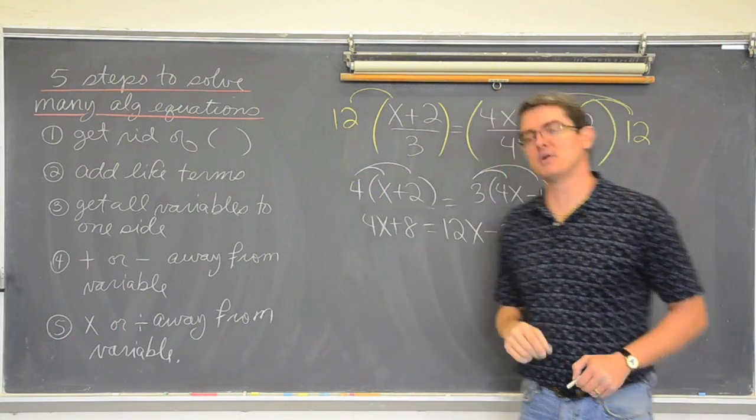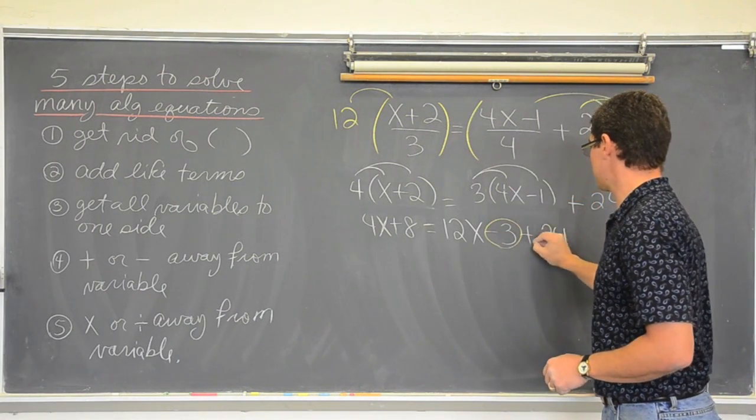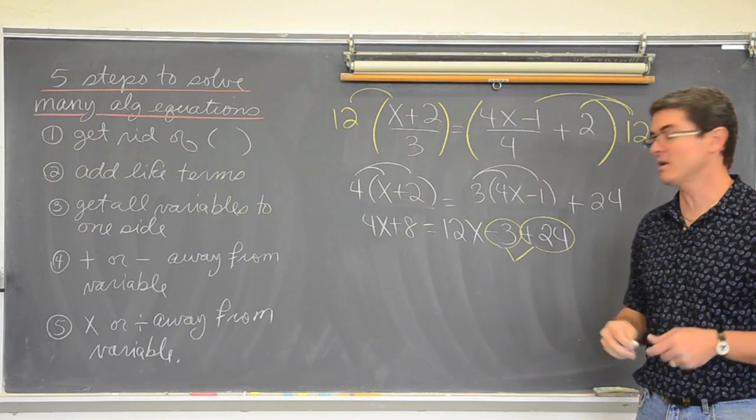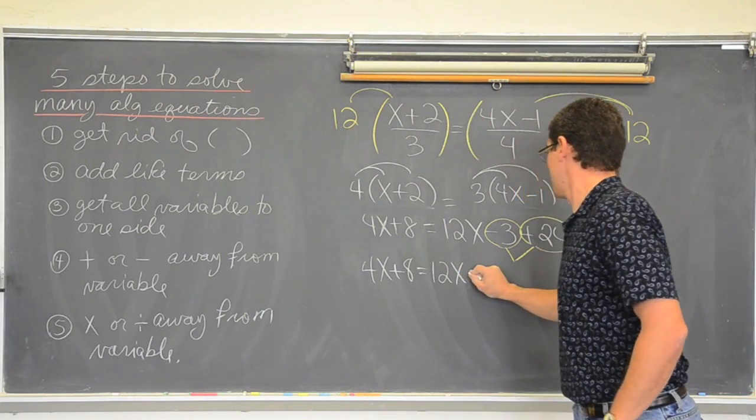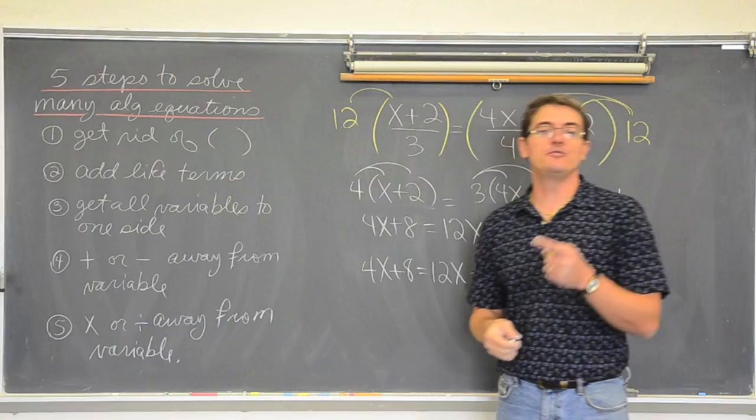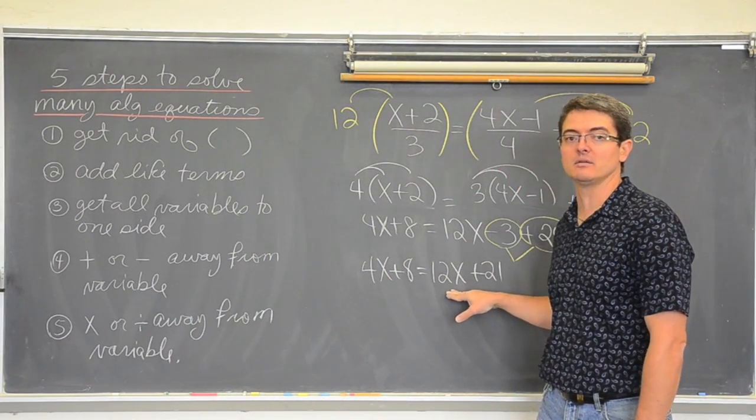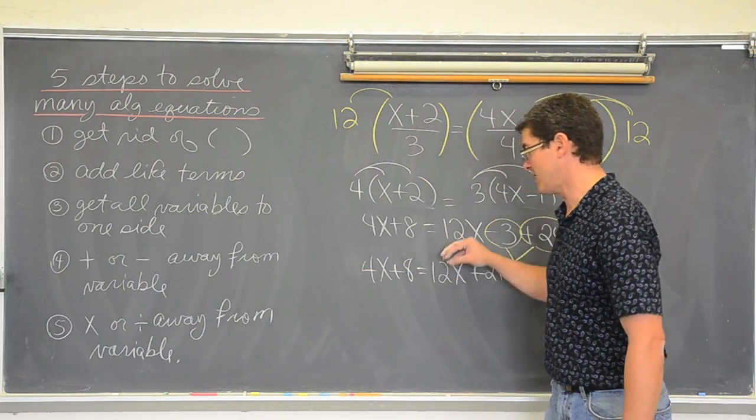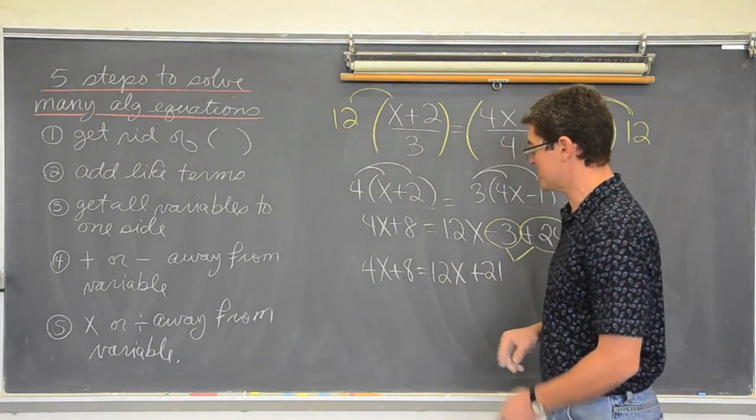If you have like terms, put those together. Again, my like terms don't have variables. I probably should have done one like that. But we have a positive three and twenty-four. Those will come together to make twenty-one. So, four x plus eight equals twelve x plus twenty-one. And again, I have a variable on both sides. Now, if you want to avoid negatives, take these small x and move it underneath the larger one. And just make your movements so that you have a positive answer. If you are a student that really wants those x's on the left because you are more comfortable with it, well then subtract both sides by twelve. I am going to move the four though this time.